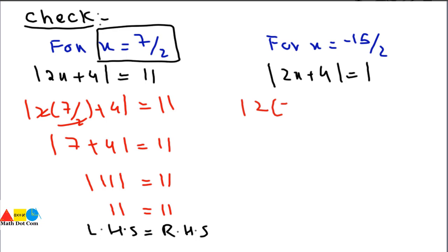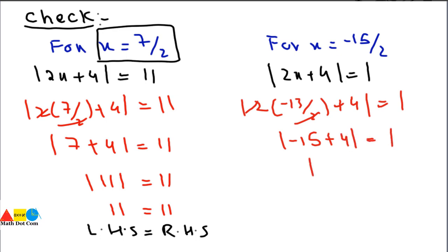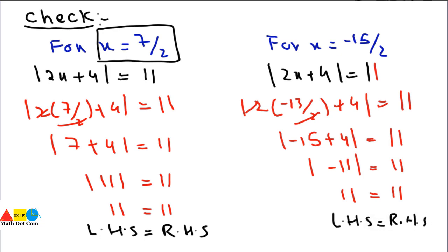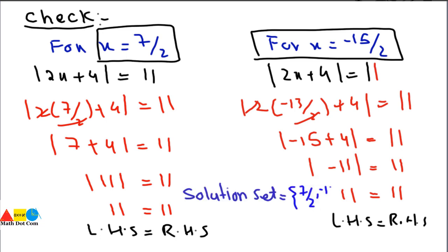Now checking x = −15/2: substituting gives |2 × (−15/2) + 4| = 11. The 2s cancel, giving |−15 + 4| = |−11| = 11, which equals 11. Left-hand side equals right-hand side, confirming x = −15/2 is also a root. The solution set is {7/2, −15/2}.